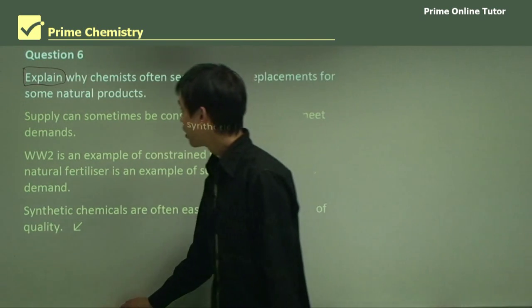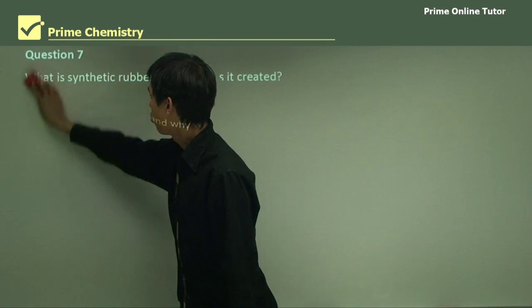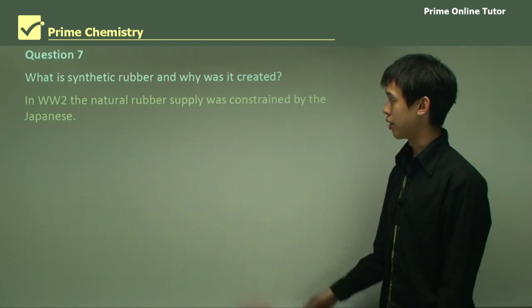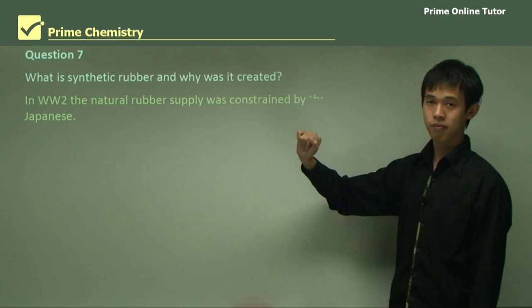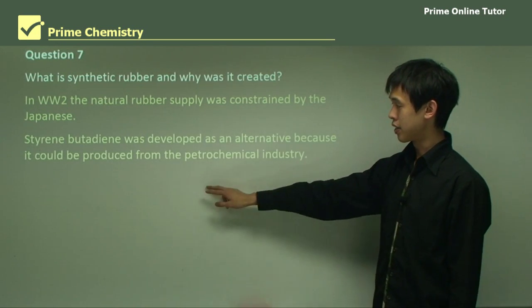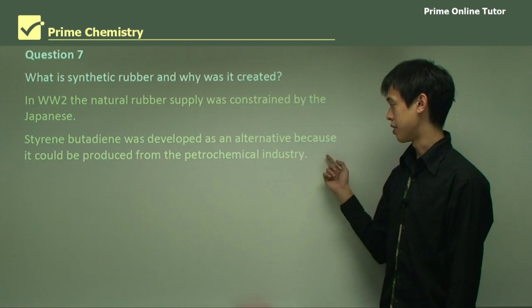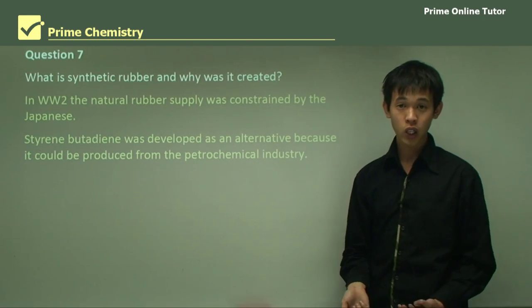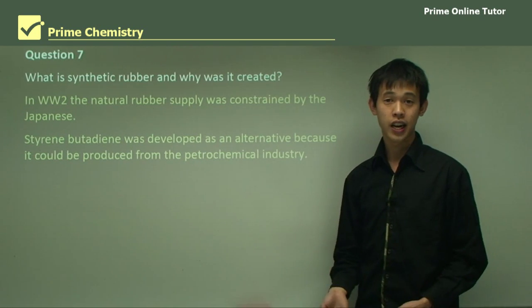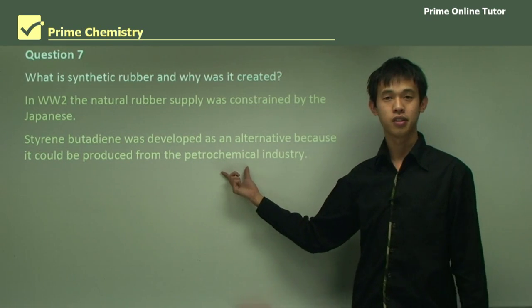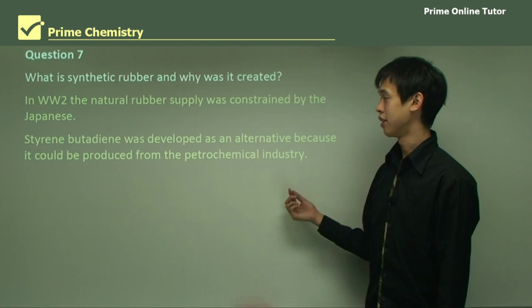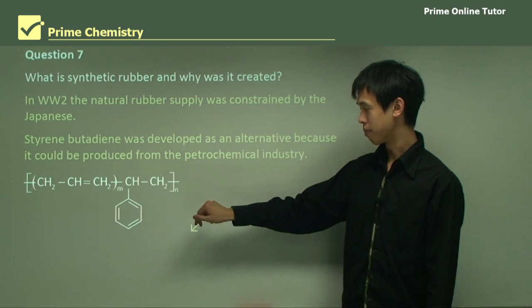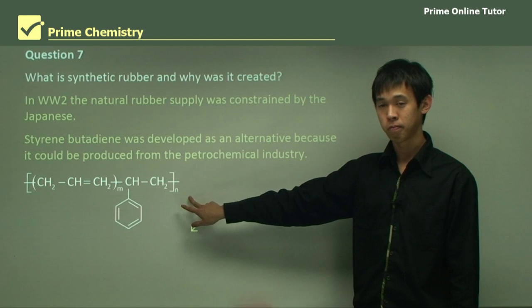Question: What is synthetic rubber and why was it created? In World War II the natural rubber supply was constrained by the Japanese, so styrene butadiene was developed as an alternative because it could be produced from the petrochemical industry. Many countries had access to oil and could produce styrene butadiene petrochemically, so they would produce synthetic rubber given the constrained supply. Here is the styrene butadiene monomer.